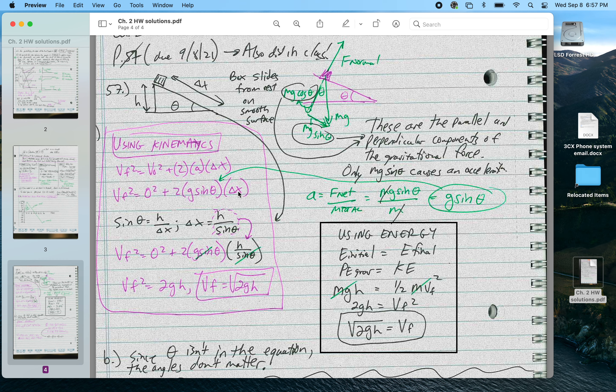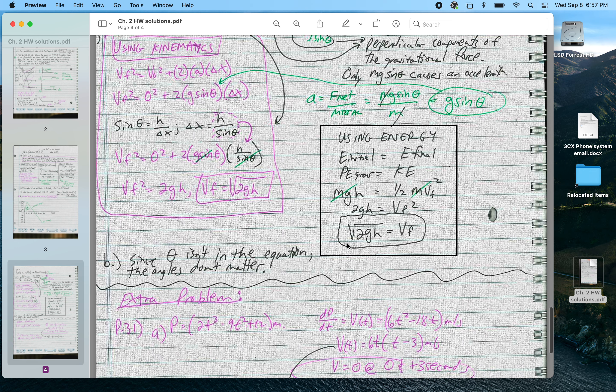This delta x, I can use basically the properties of geometry to figure out. I know that's h, I know that's theta. This delta x, I can put as delta x is equal to h over sine theta because that's the hypotenuse. Both of these give the same answer.